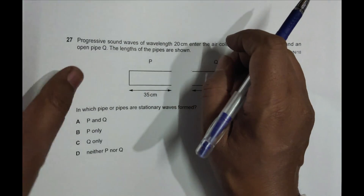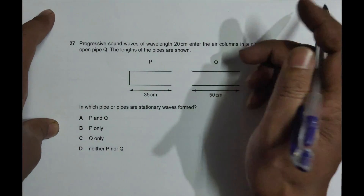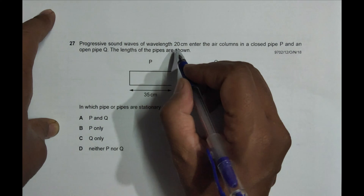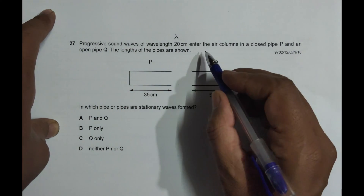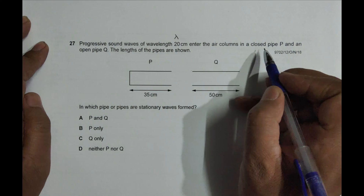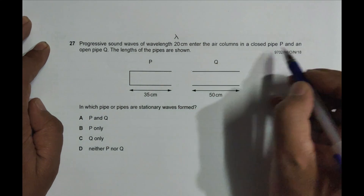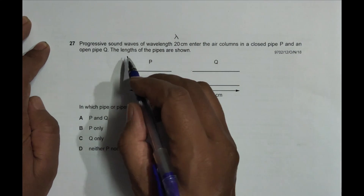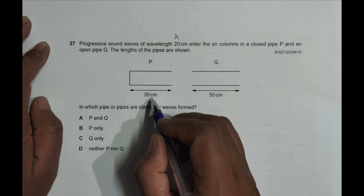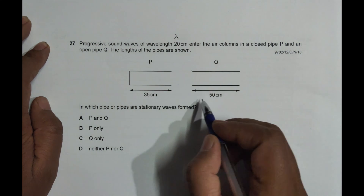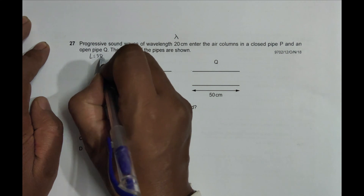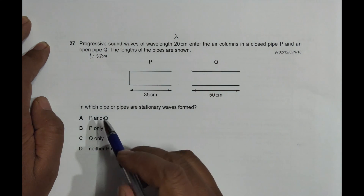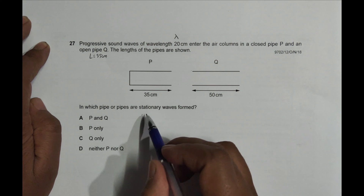It says progressive sound waves — in the other paper it says traveling waves — of wavelength 20 centimeters enter the air columns in a closed pipe P and an open pipe Q. The lengths of the pipes are shown: here it is 35 centimeters and here it is 50 centimeters. So L equals 35 cm for the closed pipe.